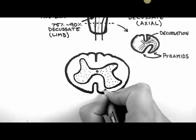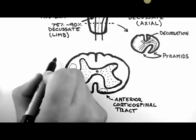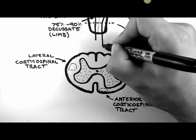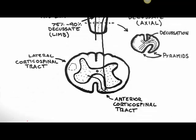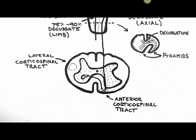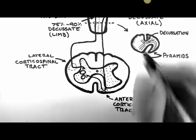After leaving the brain stem, the fibers run down through the two corticospinal tracts: the anterior corticospinal tract and the lateral corticospinal tract. When the fibers of the anterior corticospinal tract reach their target level, they decussate through the anterior white commissure before synapsing onto a neuron in the anterior horn of the gray matter. The fibers of the lateral corticospinal tract have already decussated at the level of the pyramids, so when they reach the appropriate level they simply synapse onto a neuron in the anterior horn.